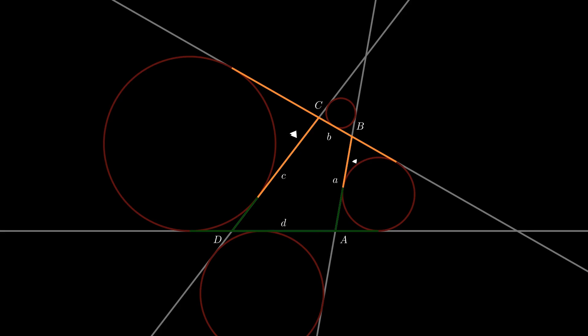Notice that the two pairs of segments highlighted are congruent. So, the orange portion of the perimeter has the same length as this long orange segment. Similarly, the green portion of our perimeter has the same length as this long green segment. Cool! But what does that mean?